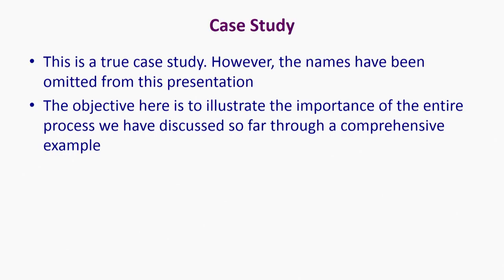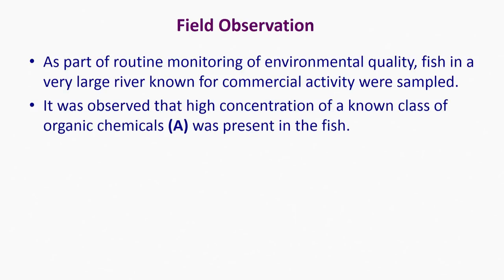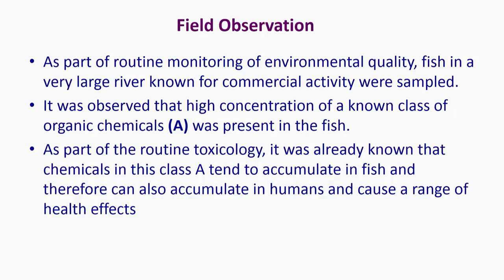There are a large number of examples of this nature, but this one covers a very wide spectrum of what we have discussed in class and it can be quite illustrative. The story begins with a field observation as part of routine monitoring of environmental quality of a river. Fish in this particular river — a very well-known river for commercial activity — were sampled routinely and found to have a very high concentration of a known class of organic chemicals. This chemical A, as part of routine toxicology, was already known to accumulate in fish and therefore also in human beings, causing a range of health effects.